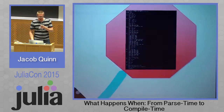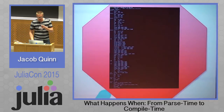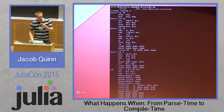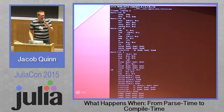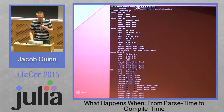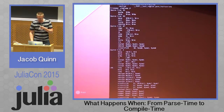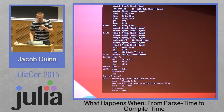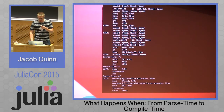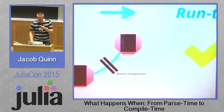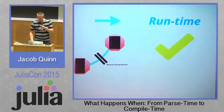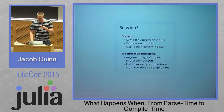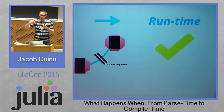Then we do native compilation. We can see the output of that with the @code_native macro or function, which can be useful if you're inclined to look at the assembly. And then we have runtime, where the code is actually executed.